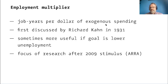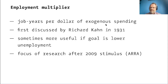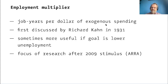We might use the employment multiplier because it's easier to measure, but also because the ultimate goal of the policy is often to lower unemployment. Output is just a change happening along the way. If we define potential output in terms of full employment, then the ultimate question for assessing whether a stimulus package is the right size is what its effect on employment is going to be.